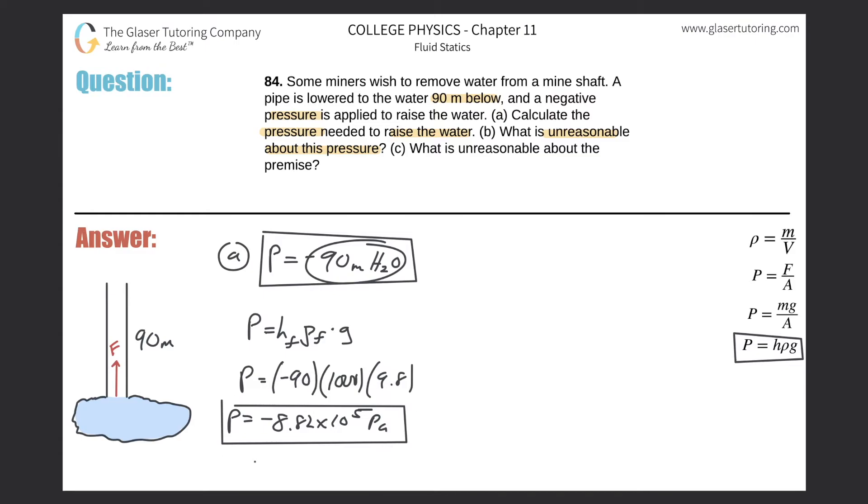If we had to think about this in terms of how many atmospheres this is, remember that there's about 1 times 10 to the fifth pascal in one atmosphere. So really we're looking at about negative 8 atmospheres of pressure. These two are equivalent.